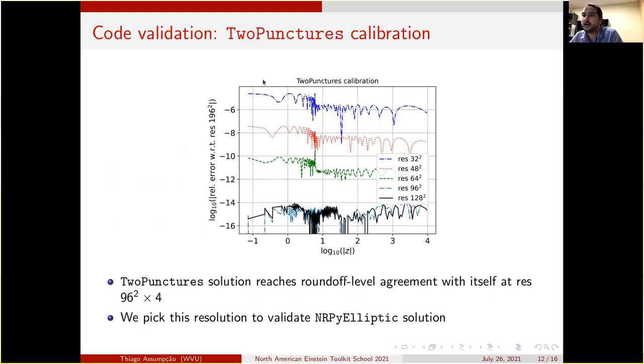We start with a calibration of the two punctures code. We find that for those particular physical parameters, the two puncture solution reaches roundoff level agreement with itself at resolution 96. We can choose a very small number here due to axial symmetry. So we pick this two puncture solution as a trustworthy solution that we can use to calibrate our own NRPyElliptic solution.